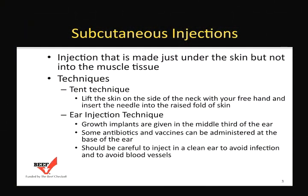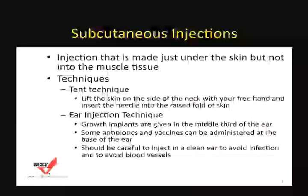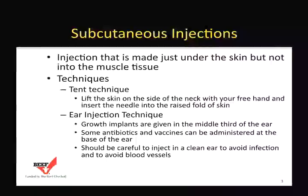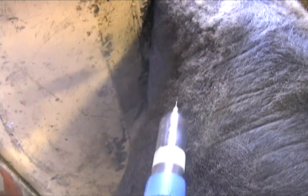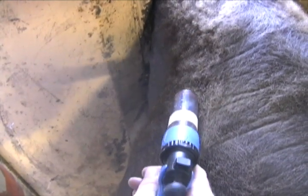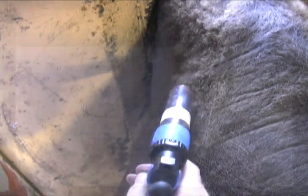A one-handed technique may also be used to give a sub-Q injection by injecting the needle in at an angle, pulling the skin away with the syringe, and then applying the injection. For the one-handed subcutaneous injection, enter the needle nearly parallel to the neck, pull the skin away with the syringe, and dispense the product.